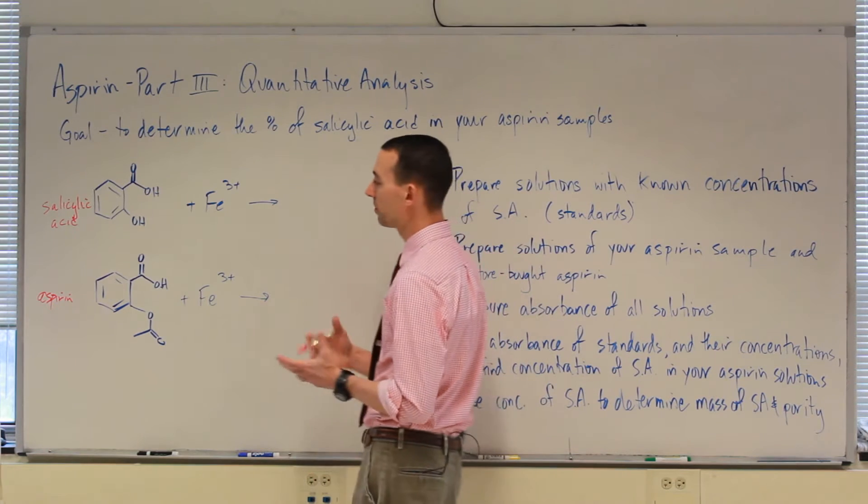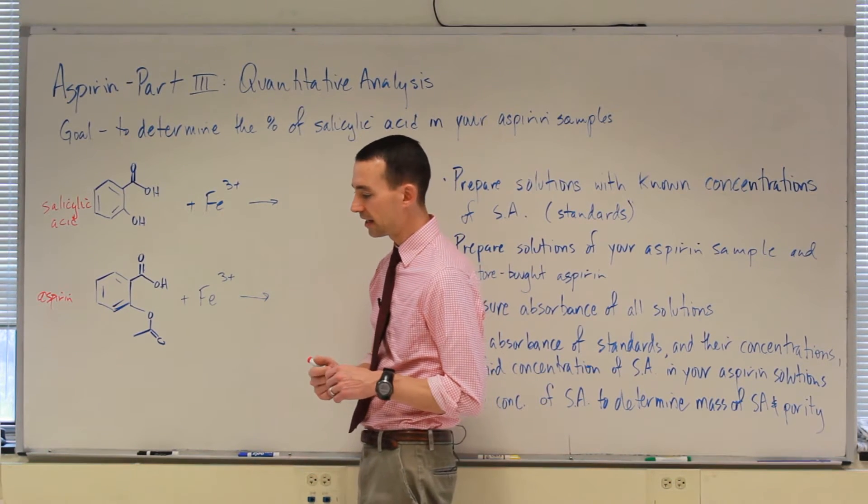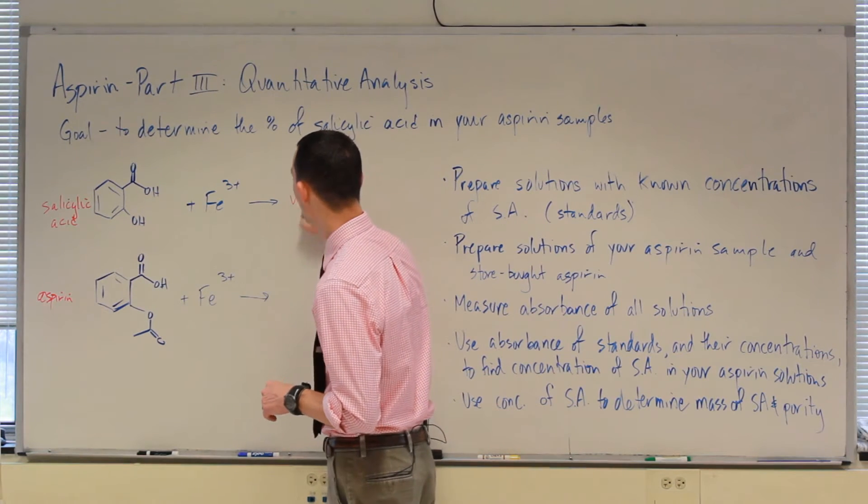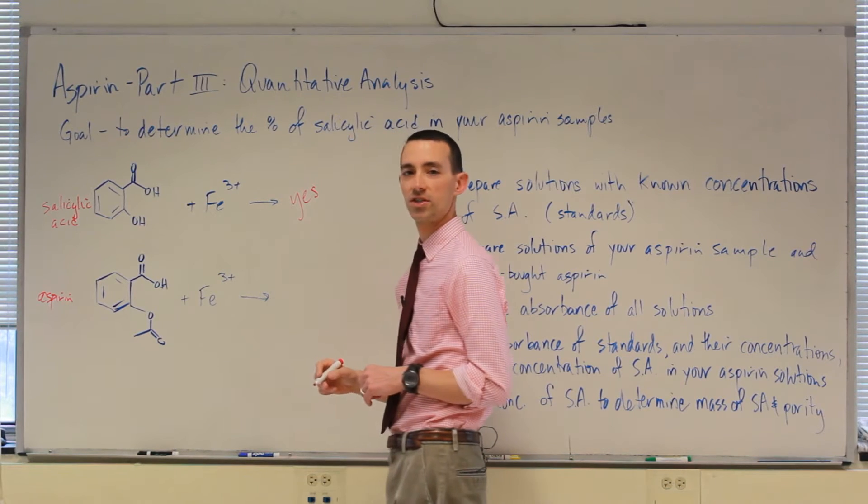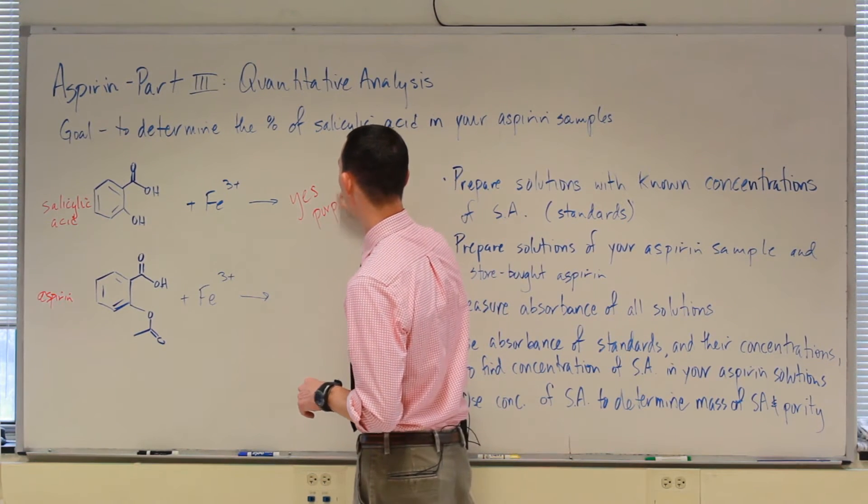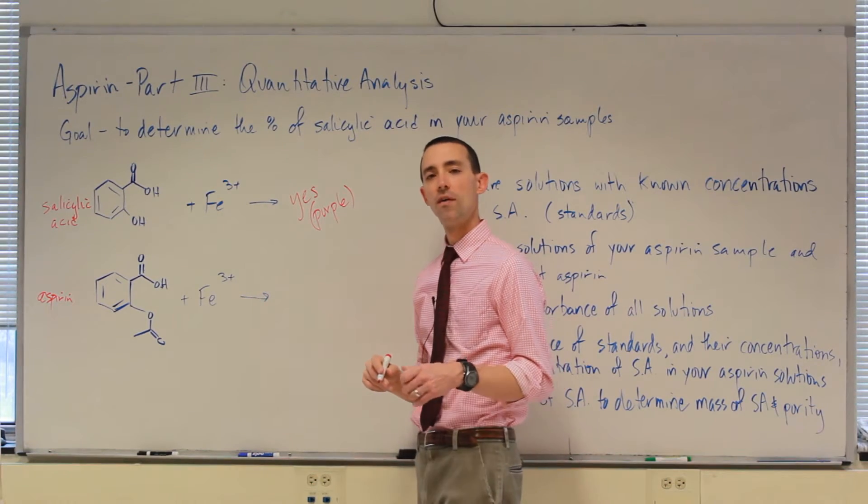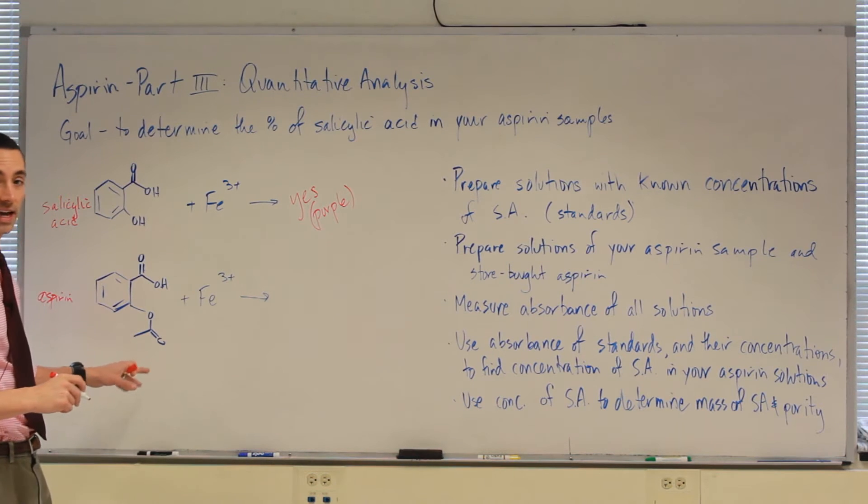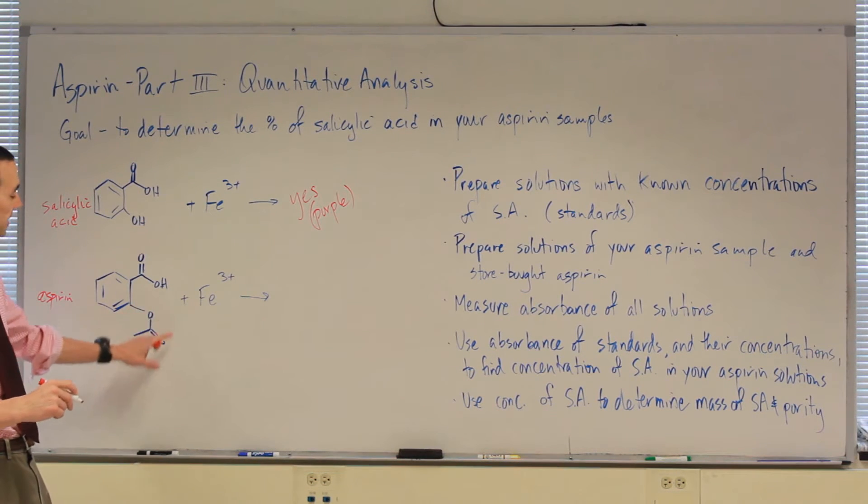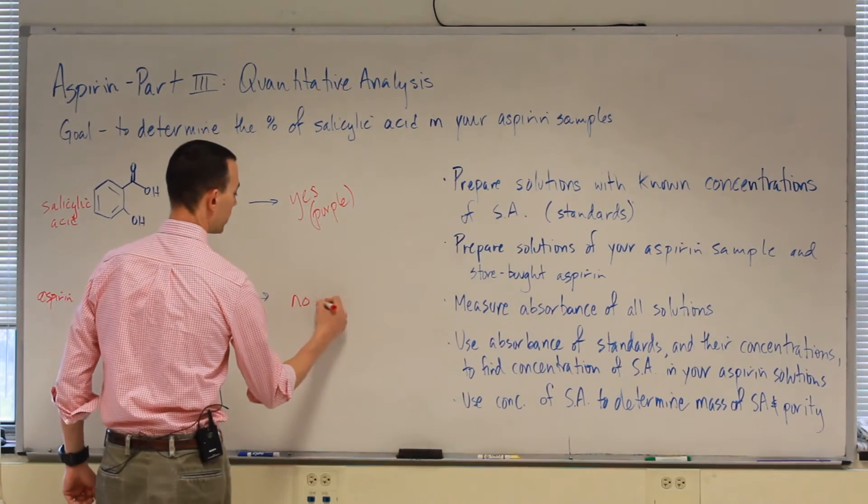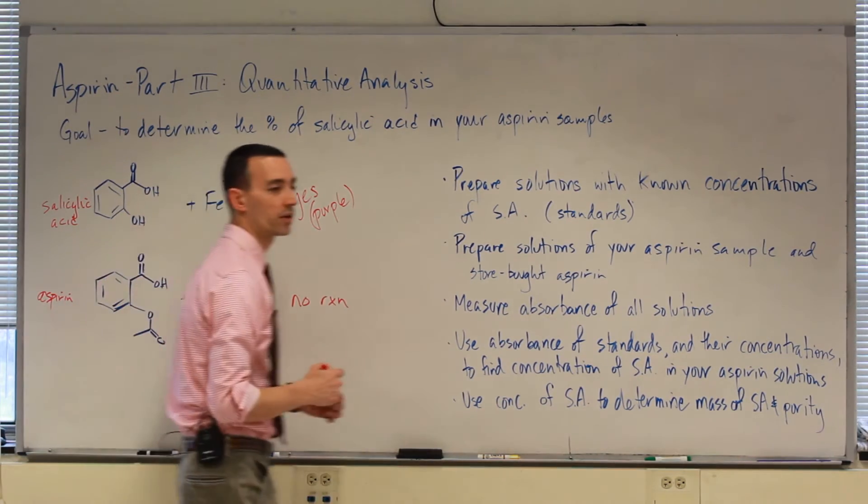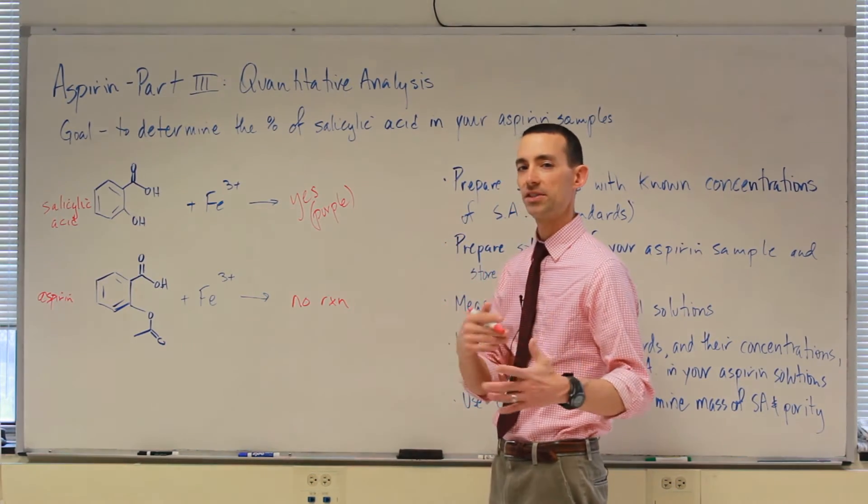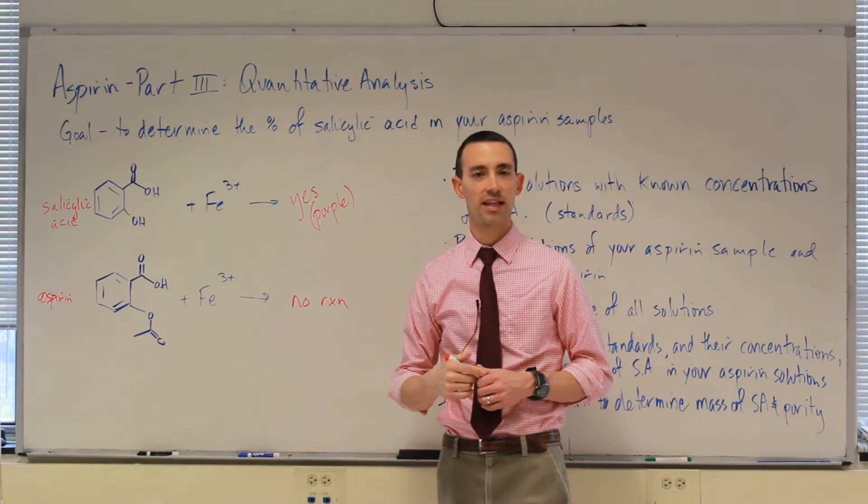Now one of the ways that these also behave differently, we saw last week in the qualitative test, is that salicylic acid will react with iron three ions in solution, and they produce that deep purple color that we saw. Hopefully you saw that in your tests. On the other hand, the acetyl salicylic acid, now that we have placed the acetate group here, will not react with the iron three chloride ions. So we were able to use this just as a quick and dirty color test to tell us if there was salicylic acid present last week.